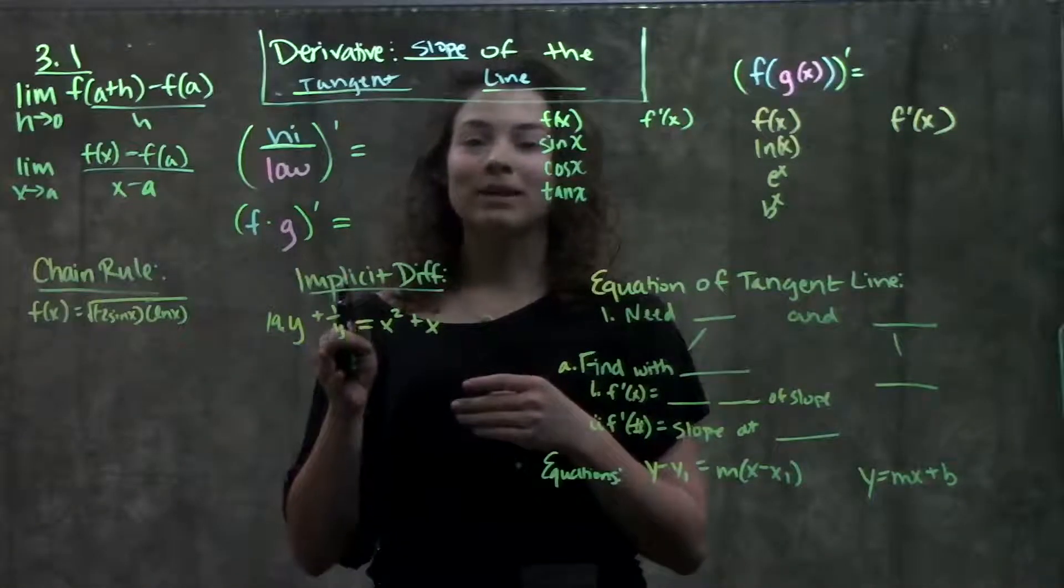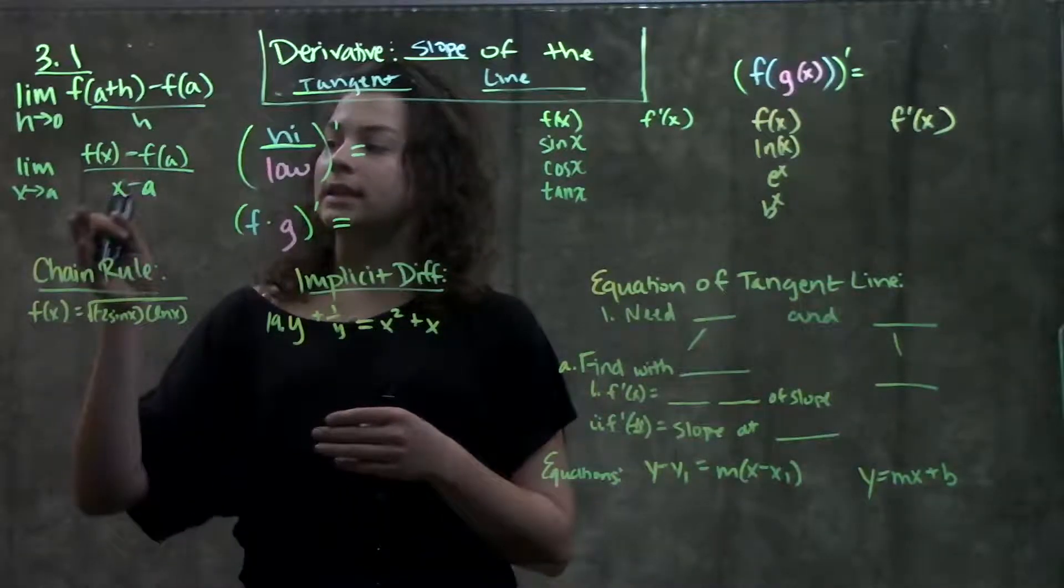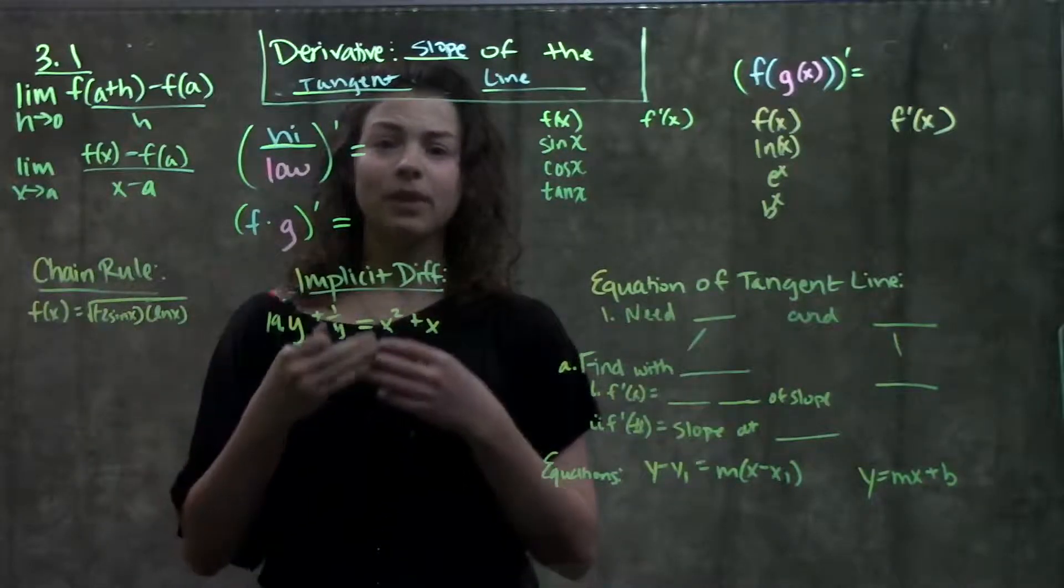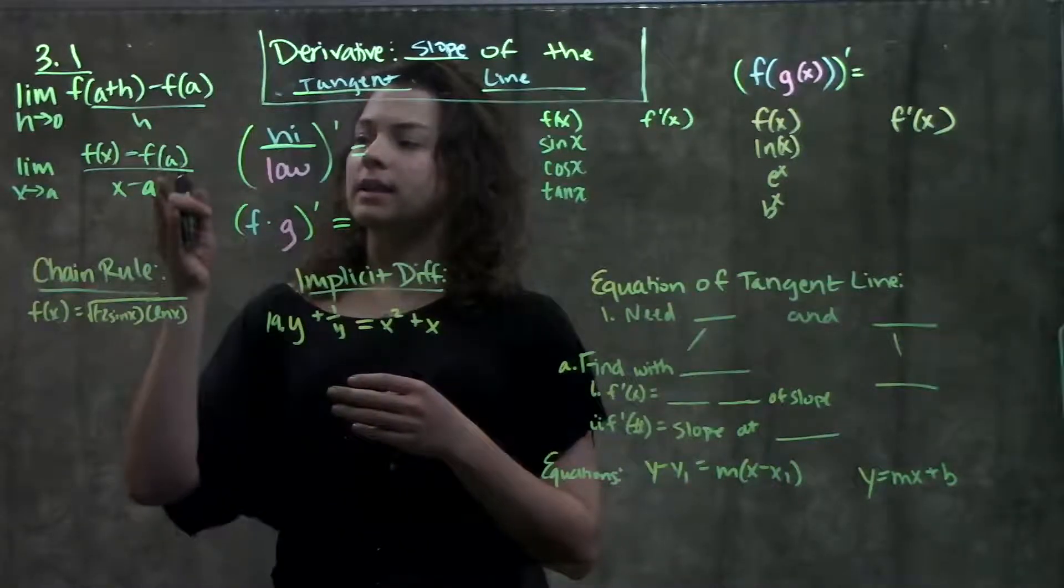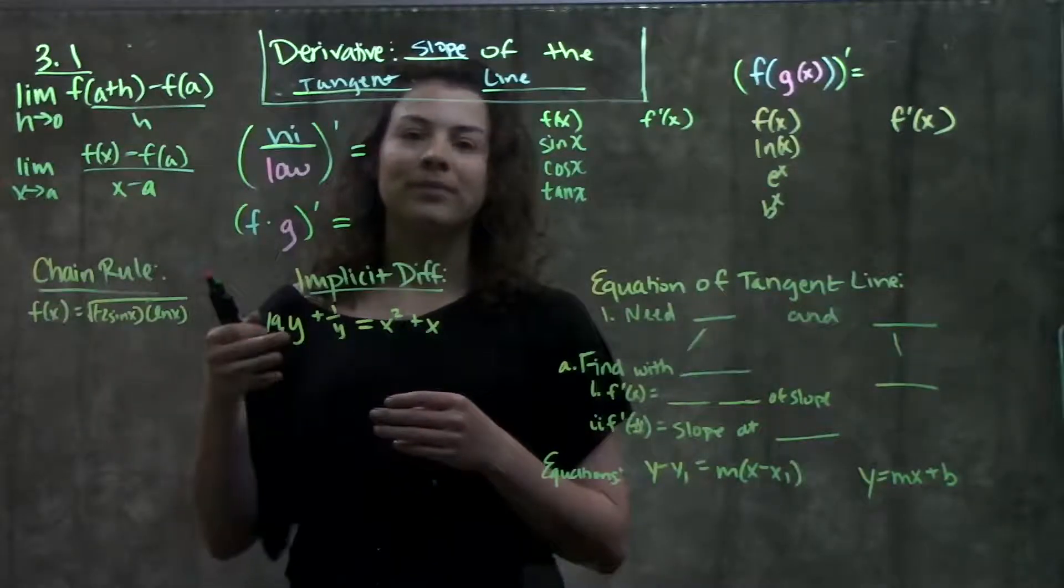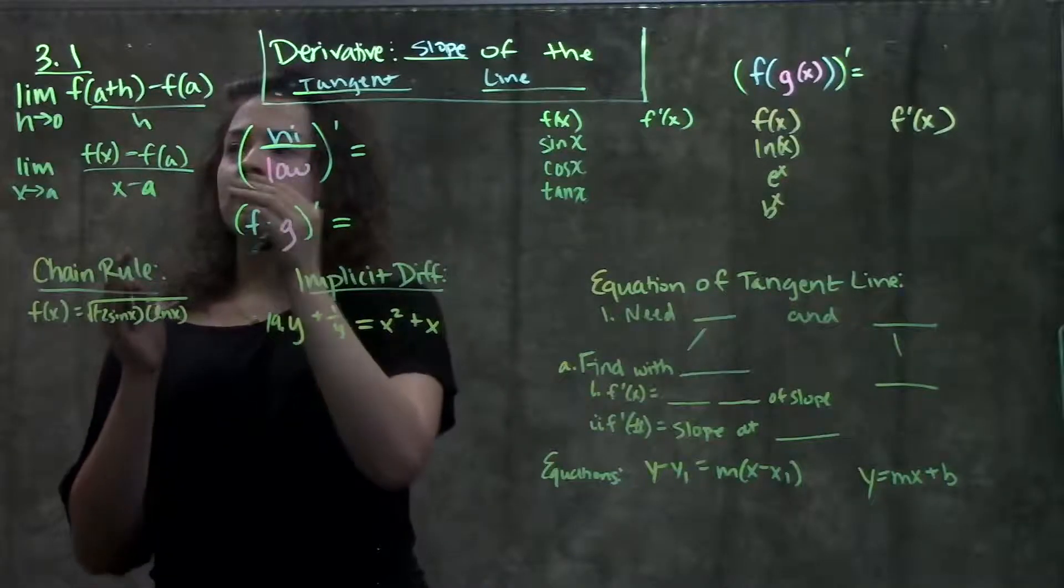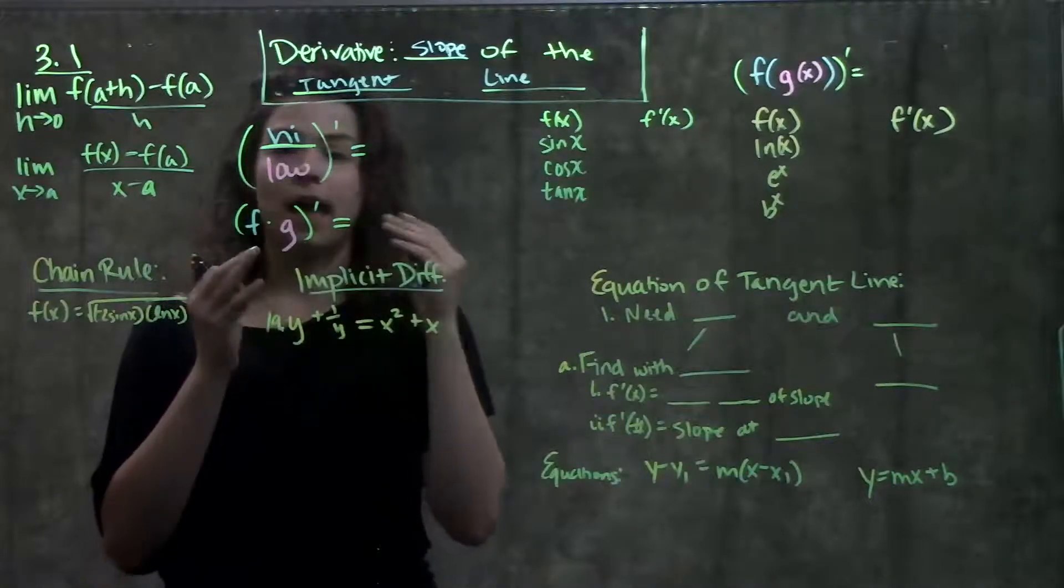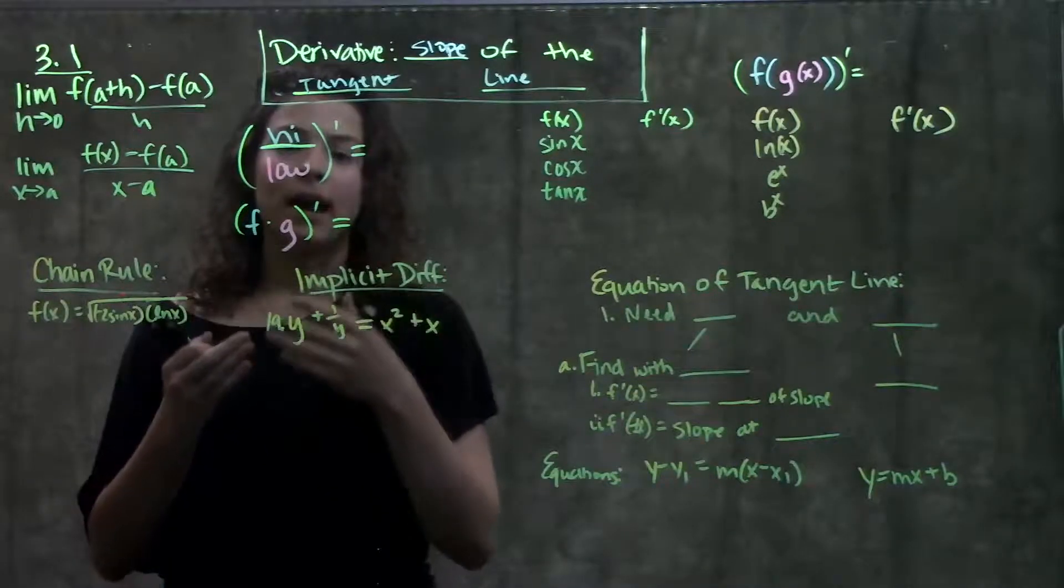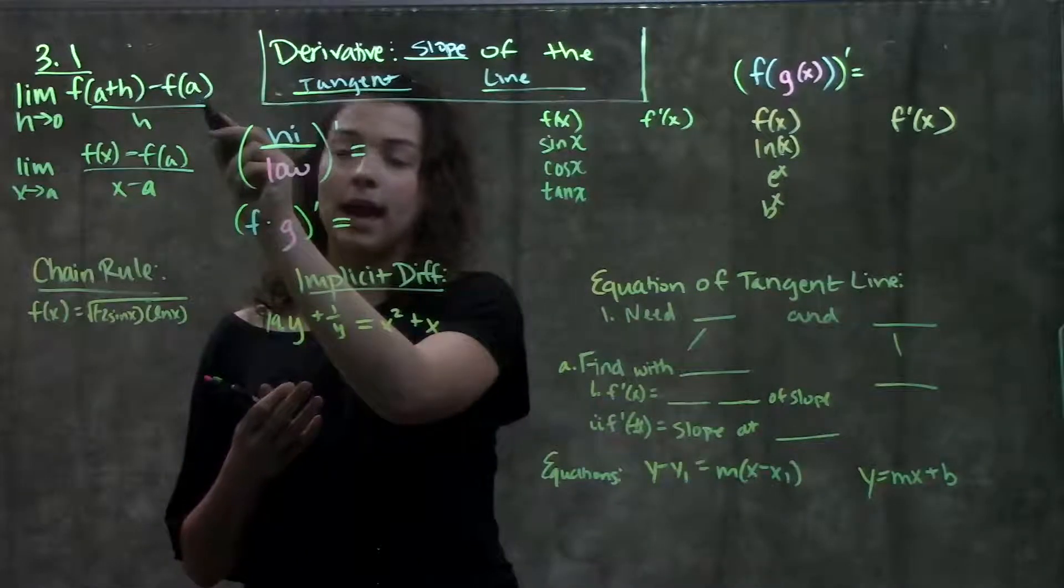Section 3.1 was the limit definition of a derivative. They gave us these two definitions, one as h approaches 0 and one as x approaches a. They asked us to calculate the derivative using these definitions, and they gave us some value for a. To do that, we just plugged in our a into the function, and we got f of a plus h, wherever we saw an x, minus f of a, wherever we saw an x, all over h. And same thing over here. We just solved that out. Once you simplify things, you'll get what the derivative is at this point a.